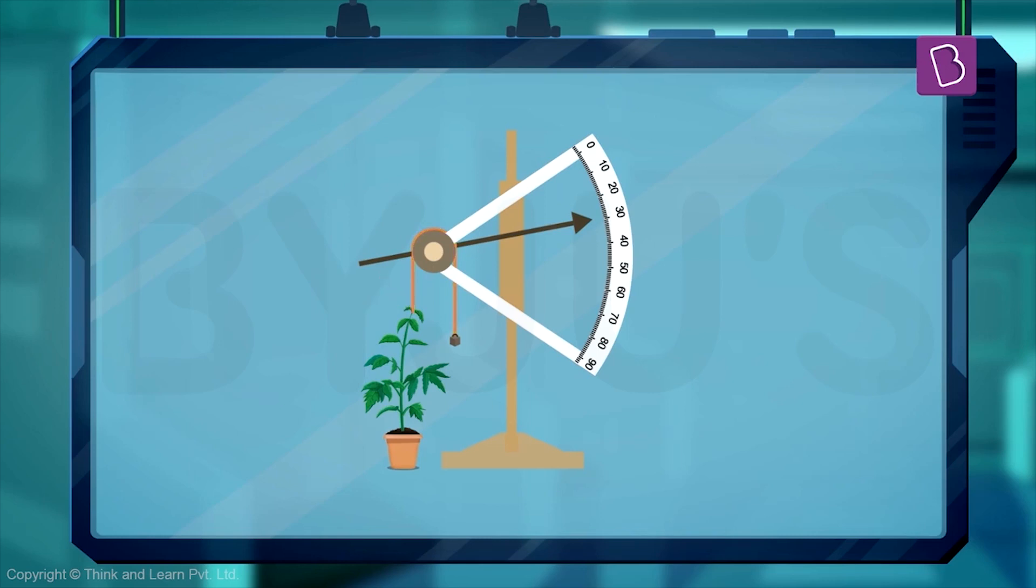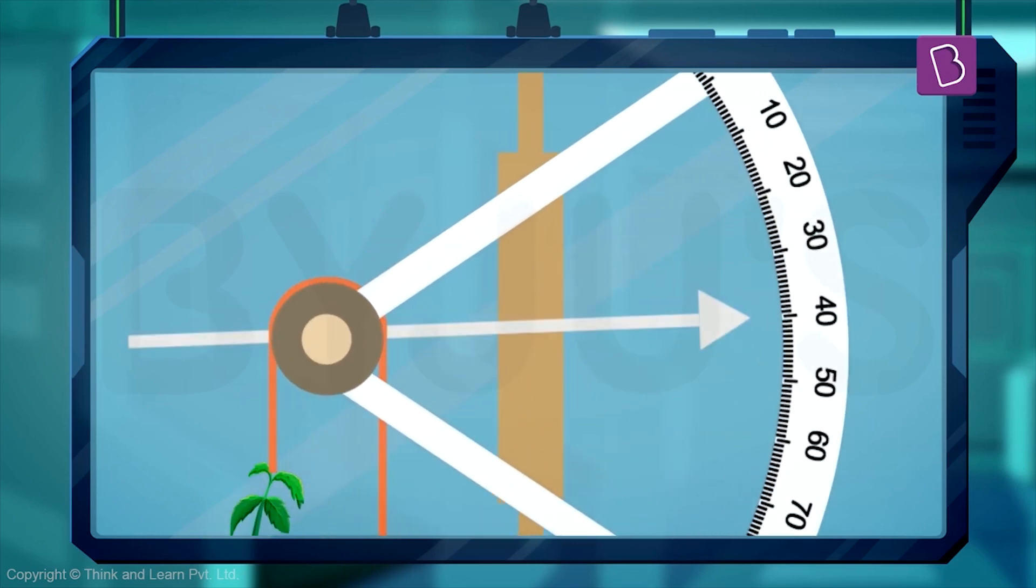Now what happens is, as this plant grows, it pushes up that wire, and that pushes down the indicator, telling us that the plant has grown. The reason this is helpful is because the indicator is really long. Even if the plant grows a little bit, the indicator moves by a noticeable amount, and it's easy for us to see that the plant has grown.